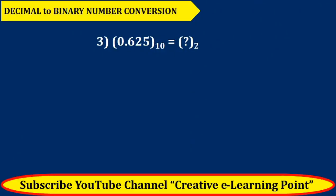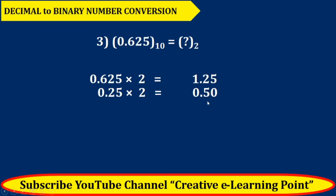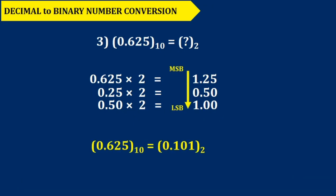Let's convert 0.625. 0.625 times 2 is equal to 1.25. We take the fraction number: 0.25 times 2 is 0.50. 0.50 times 2 is 1.00. The fraction number is 0.00, so we stop at this point and collect the integers. The corresponding binary number is 0.101.